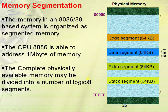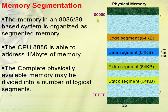The number of code, data, extra, and stack segments depends on the user program. The complete physically available memory may be divided into a number of logical segments. The starting address is 00000 and the ending address is FFFFF in hexadecimal. If represented in binary form, it gives a 20-bit address, which is the exact location where the operand resides.